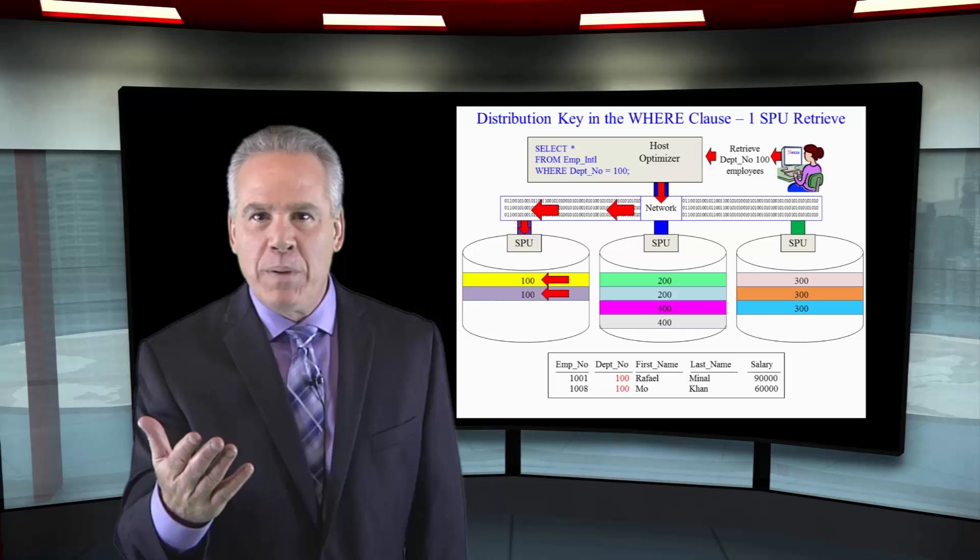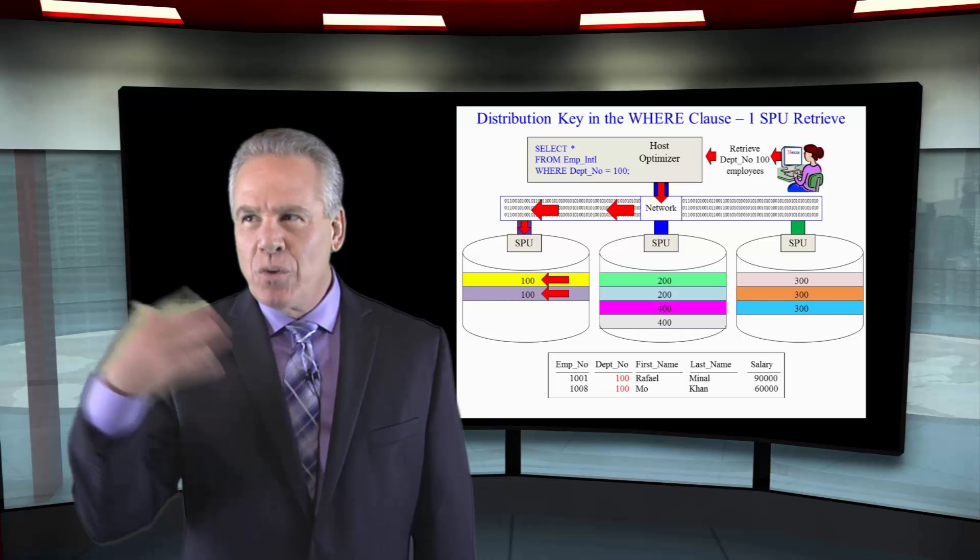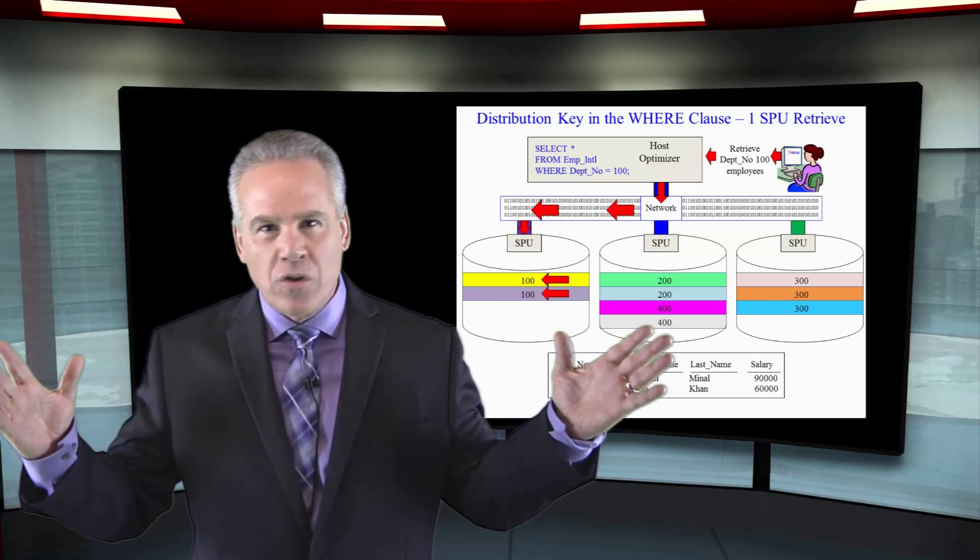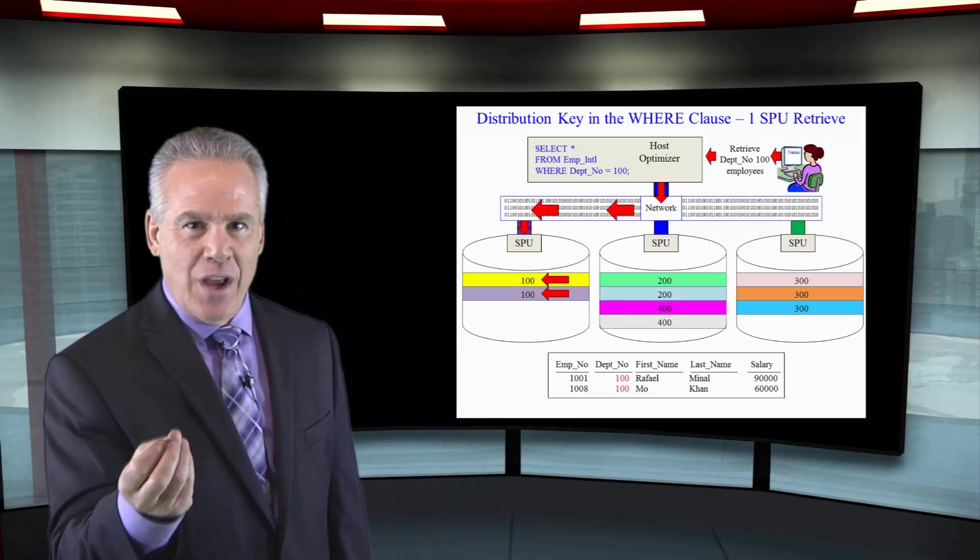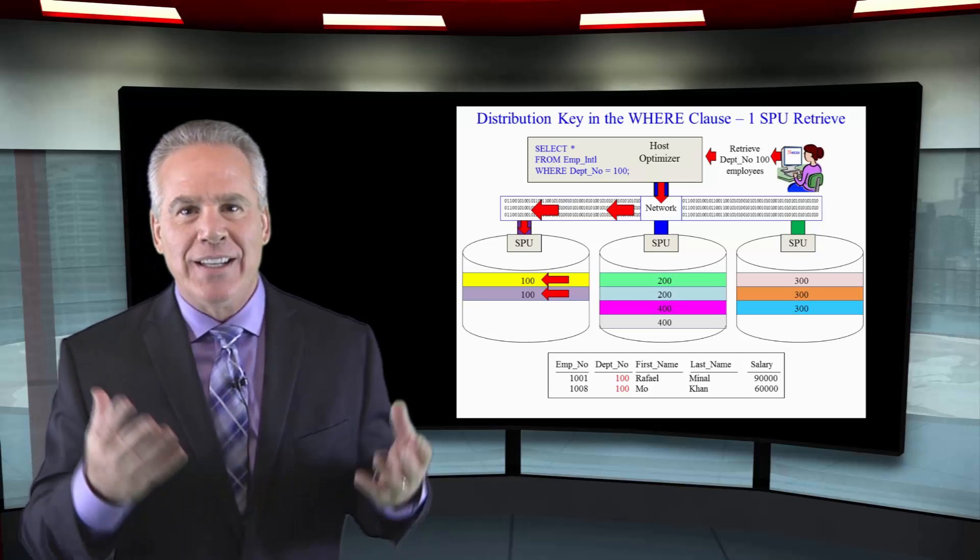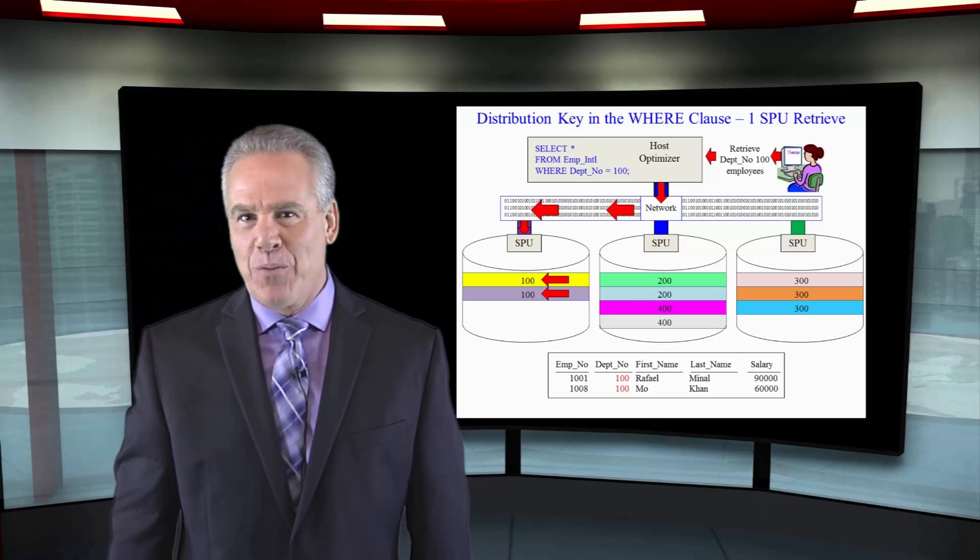We've got multiple people in Department 100, so when we query it, isn't it going to be an all SPU query? No, because that's the distribution key. We only go to one SPU to get all of the people in Department 100.